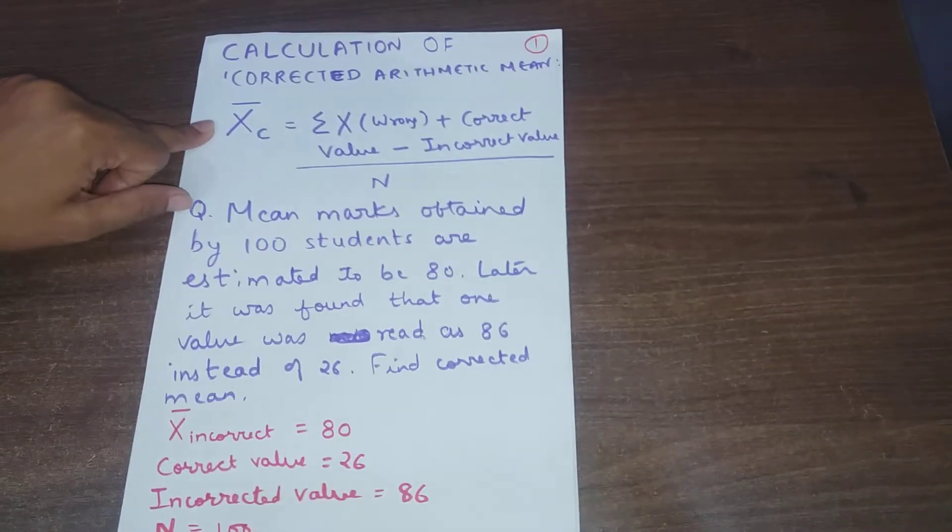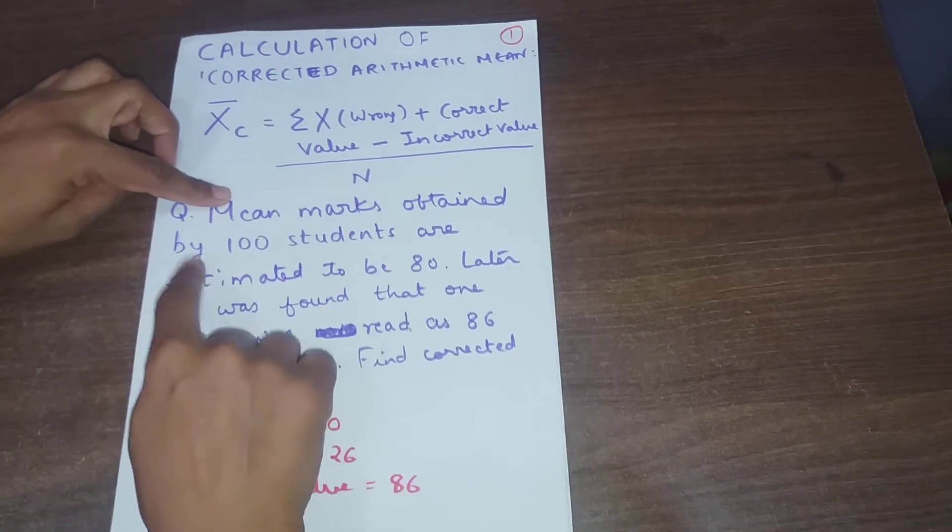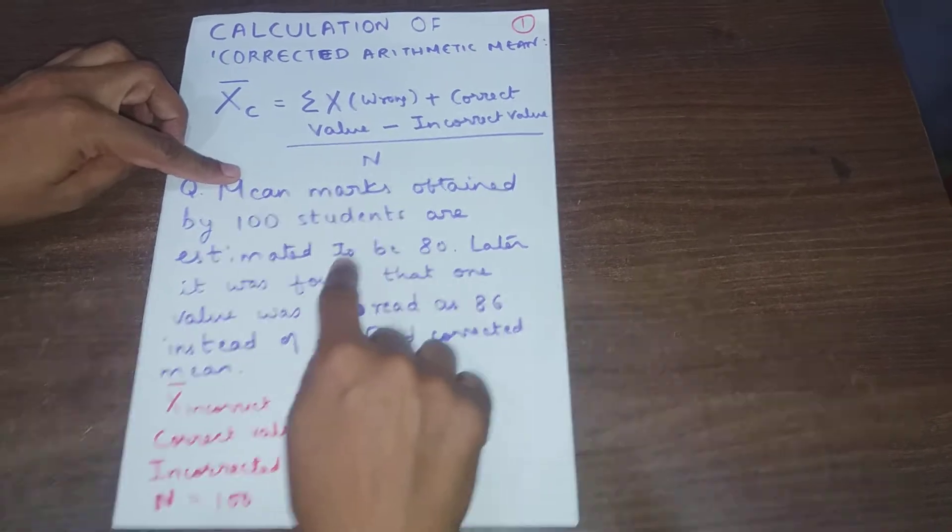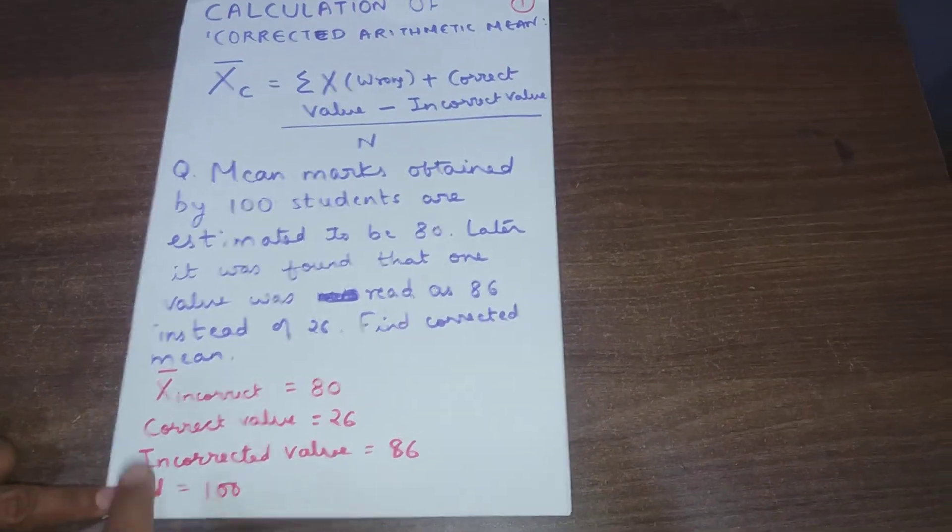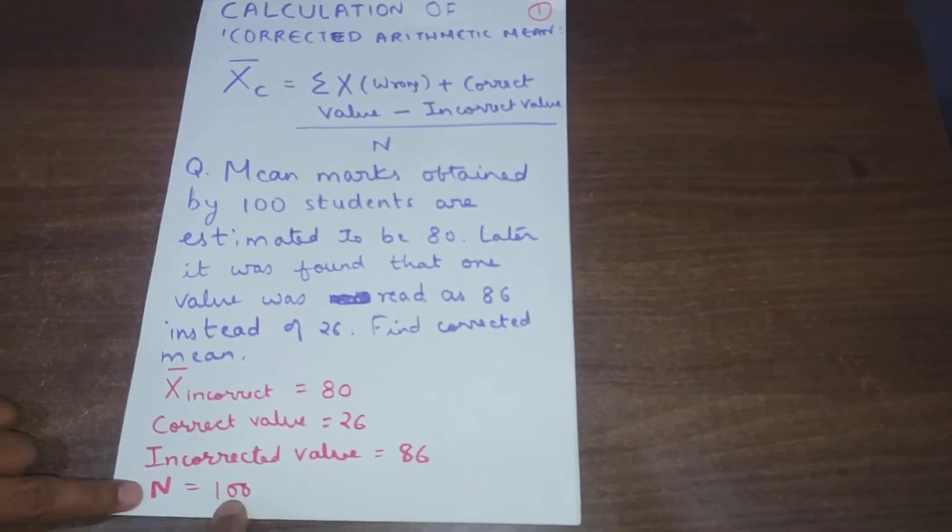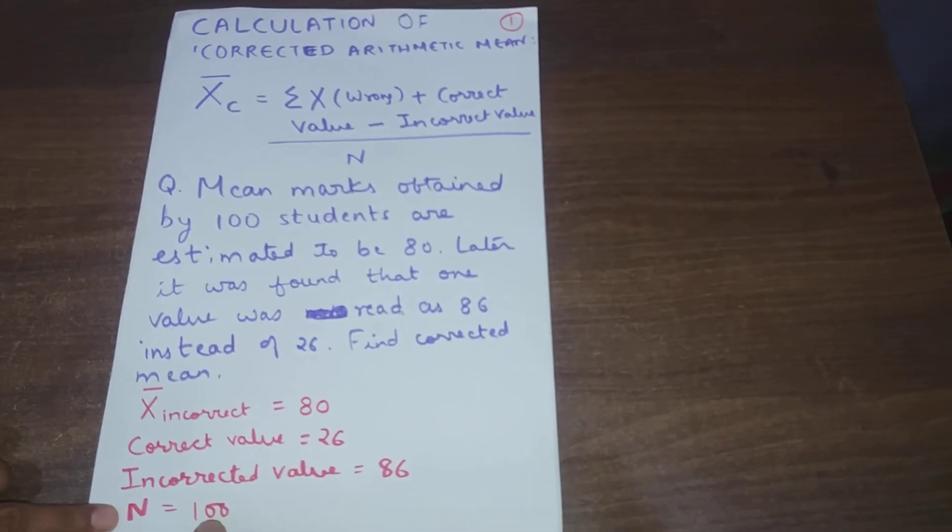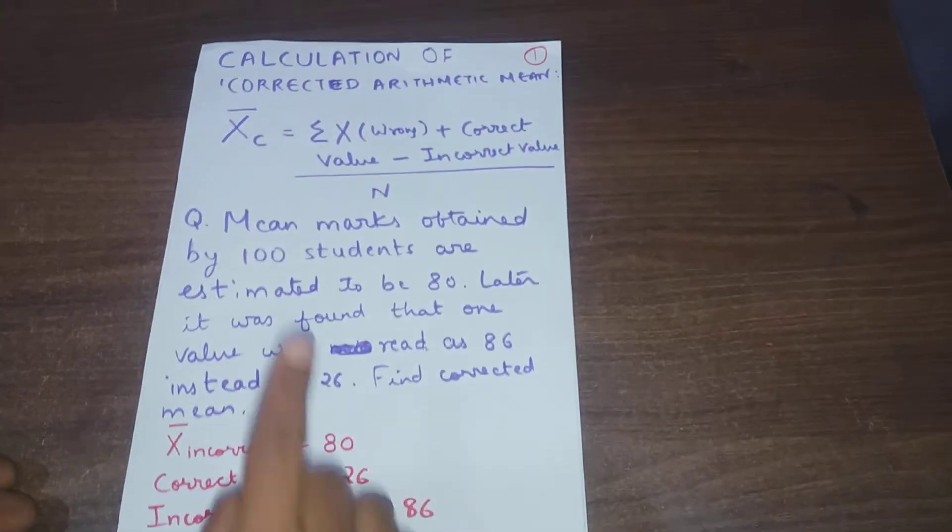First of all, let us see what is given in the question. Mean marks obtained by 100 students are estimated to be 80. Here, number of students n equals 100, and mean marks which is incorrect actually is 80.